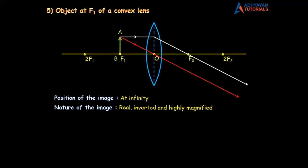People who are on laptop, just click the slide. It will help you when you do the homework. This is your homework — diagram number 5, object at F1 of a convex lens.